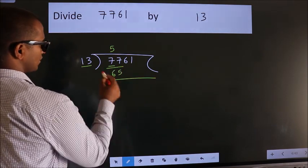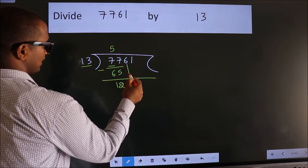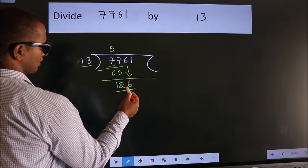Now we should subtract. We get 12. After this, bring down the beside number. So, 6 down. So, 126.